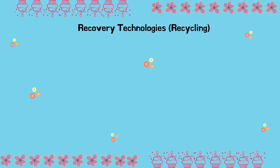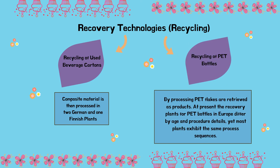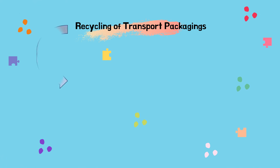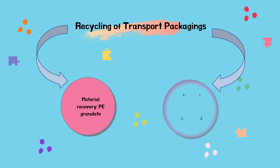Recovery technologies — recycling. Recycling of used beverage cartons: the composite material is processed in two German and one Finnish plant. Recycling of PET bottles: PET flakes are retrieved as products; most European recovery plants exhibit the same process sequences despite differences in age and procedure details. Recycling of transport packagings — material recovery — PE granulate: used PE transportation packaging is cleaned, shredded, and milled. The PE granulate is reused in the plastics industry, replacing new PE granulates. Material recovery of corrugated cardboard: used corrugated cardboard packaging is sorted and reused in the production of waste paper-based corrugated base paper.